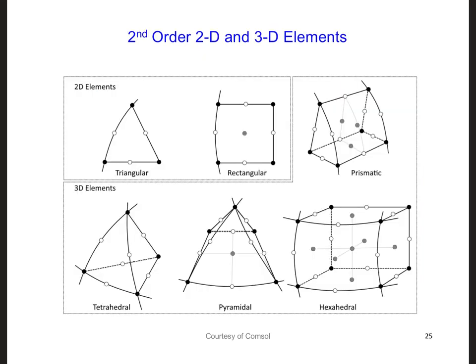And lastly, we can construct higher order elements in two dimensions and three dimensions, as you can see here, where the elements have nodes at the corners and also at the midpoints of each edge. Or in three dimensions, it's at the corners, and then also at the midpoints of the edges, and also the midpoints of the sides of the element. Or here, there's also one at the center of the element.